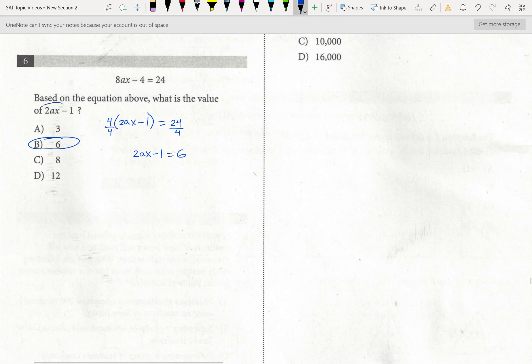So again, whenever I kind of see something out of the ordinary as far as them asking for a 2ax minus one, they're up to something. And it's just a trick like there was on this problem.